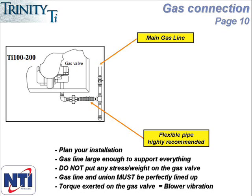So if you're using rigid pipe in the area shown in the picture on this slide, you need to make sure the pipes are well supported and that the two pipes line up at the union. Remember, you always need to use rigid piping inside the cabinet of the boiler.